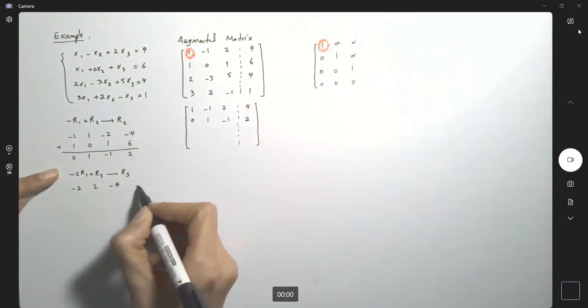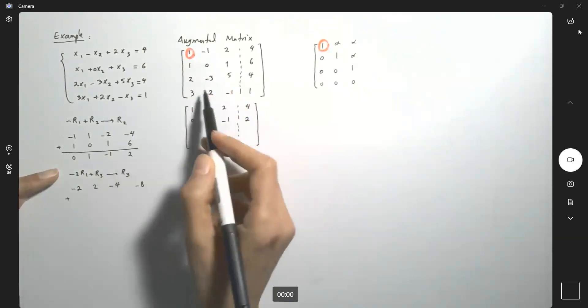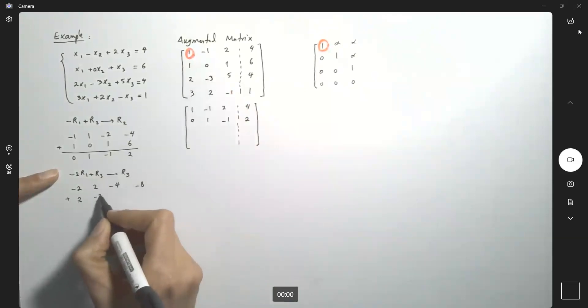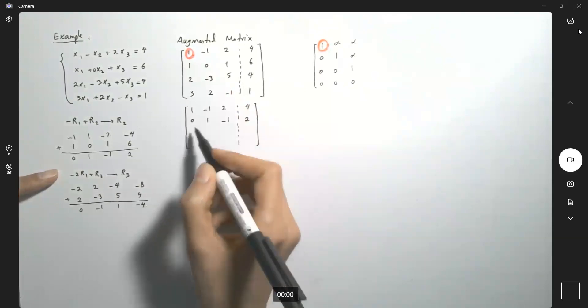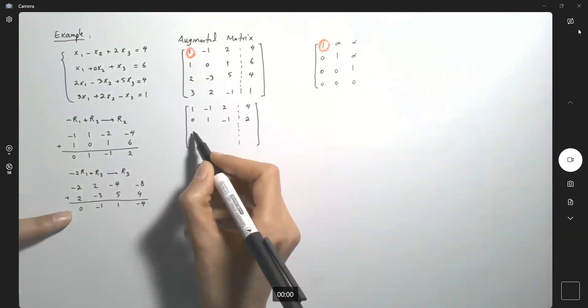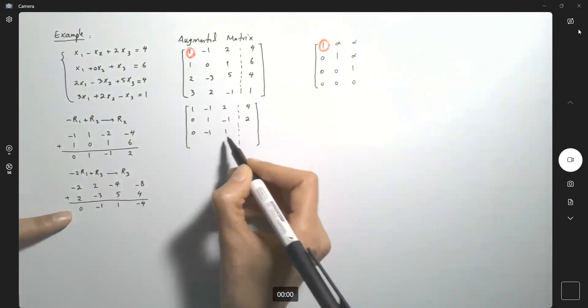r1 plus r3 replaced for r3. So I end up having a negative two and I have a two. I have a negative four and negative eight plus r3. My r3 is two, negative three, five, and four. If I add these together, I add zero, negative one, one, and negative four. So my third row is now my new third row is zero, negative one, one, and negative four.